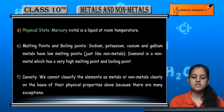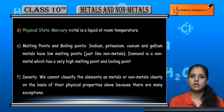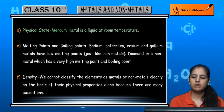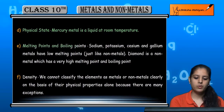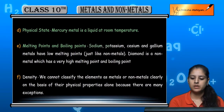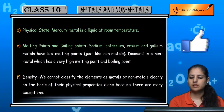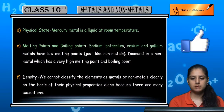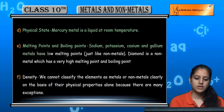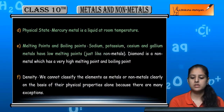Next is physical state: all metals are solid at room temperature, but mercury, which is a metal, is liquid at room temperature. Regarding melting points and boiling points: metals generally have high melting and boiling points, but sodium, potassium, cesium, and gallium have low melting points.